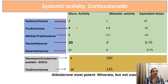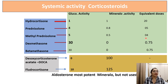Prednisolone has a glucocorticoid activity of 4 compared to hydrocortisone, and a mineralocorticoid activity of 0.8. Its dose is 5 mg because it is four times more potent than hydrocortisone. Methylprednisolone has a glucocorticoid activity of 5, mineralocorticoid activity of 0.5, and a dose of 4 mg. Dexamethasone has a glucocorticoid activity of 30 and mineralocorticoid activity of 0, so there is no water or salt retention; no edema or hypertension occurs, and its dose is 0.75 mg.